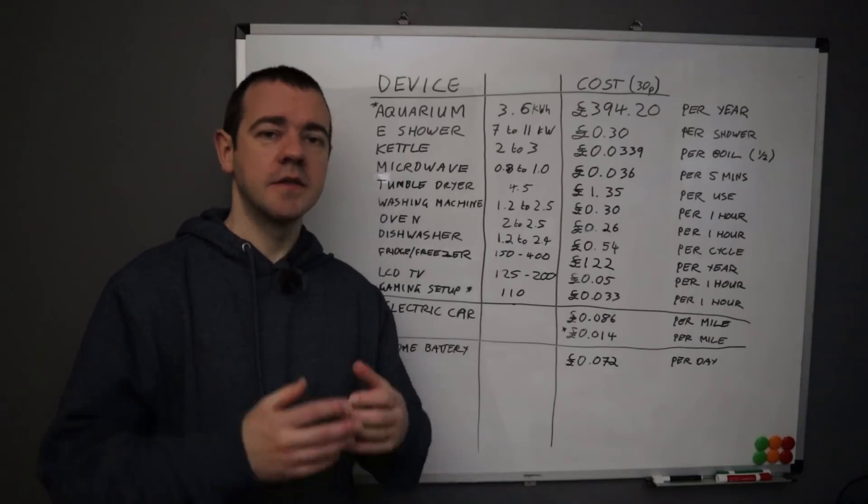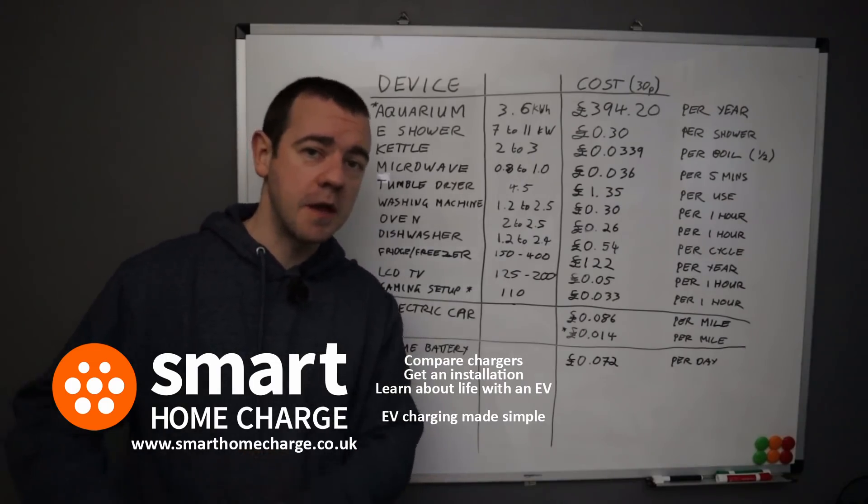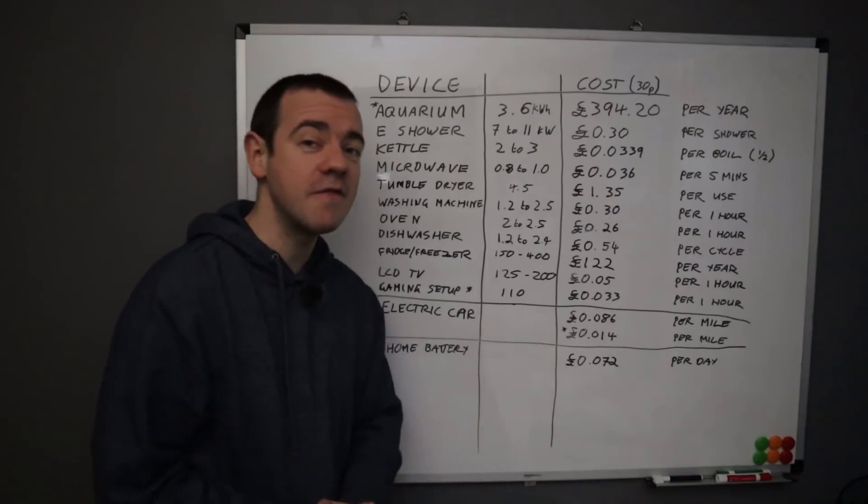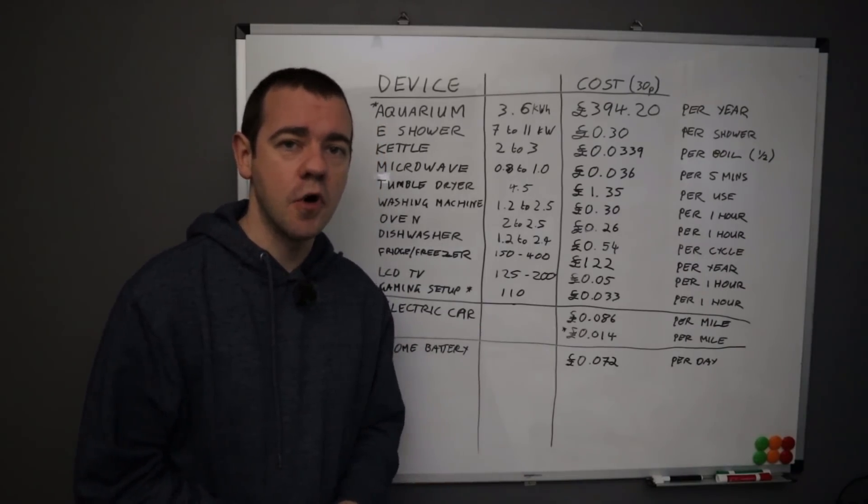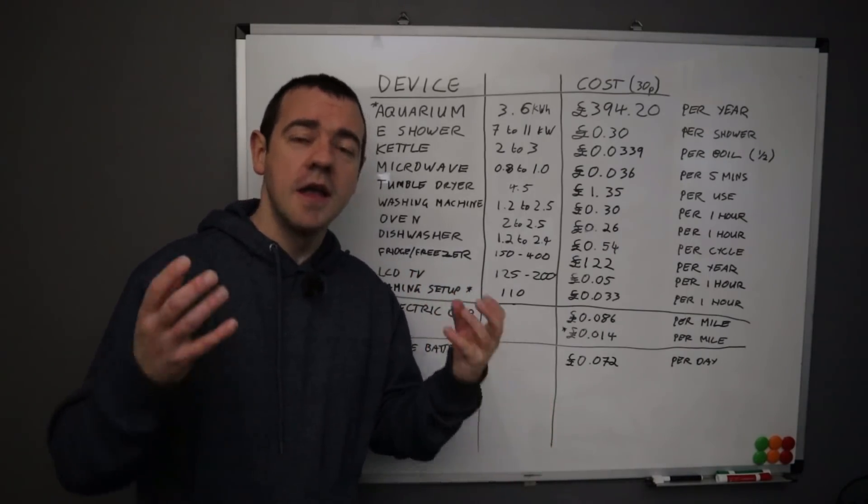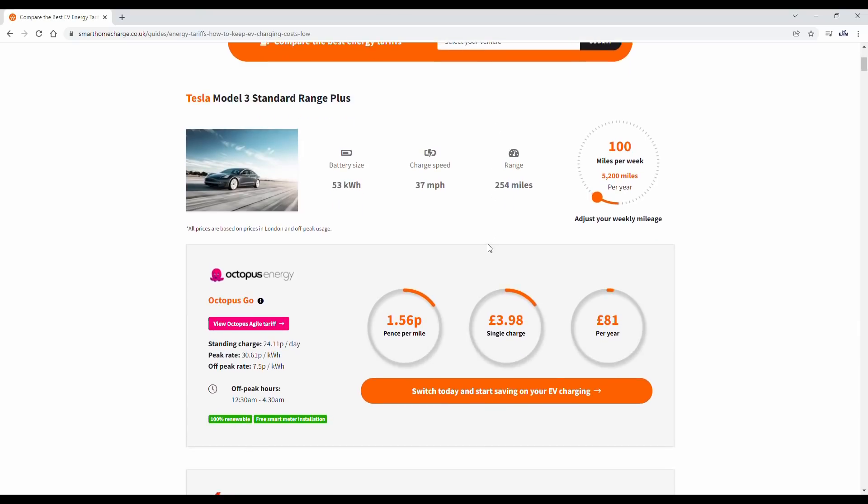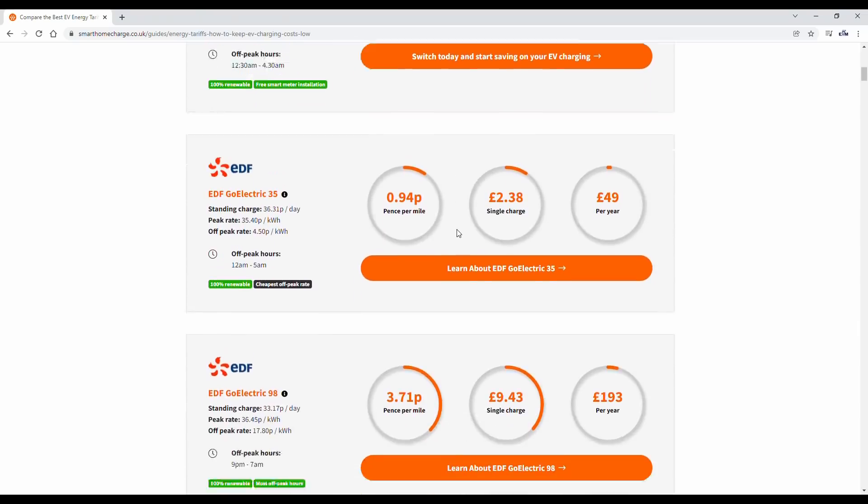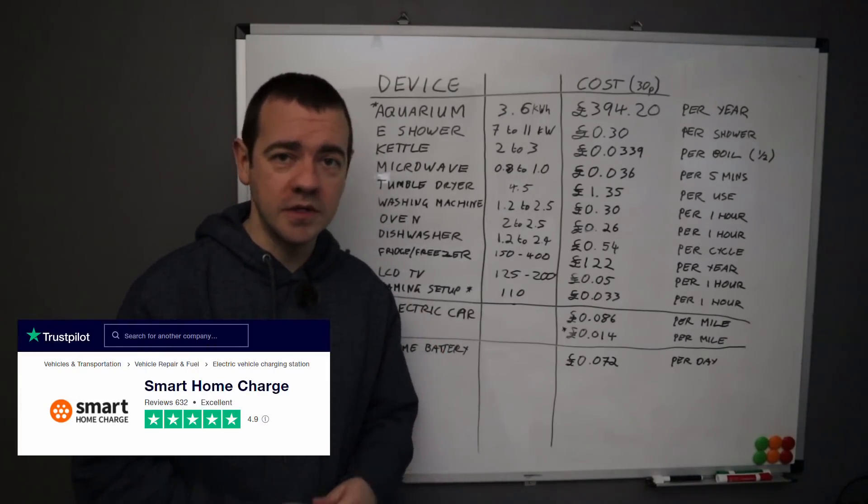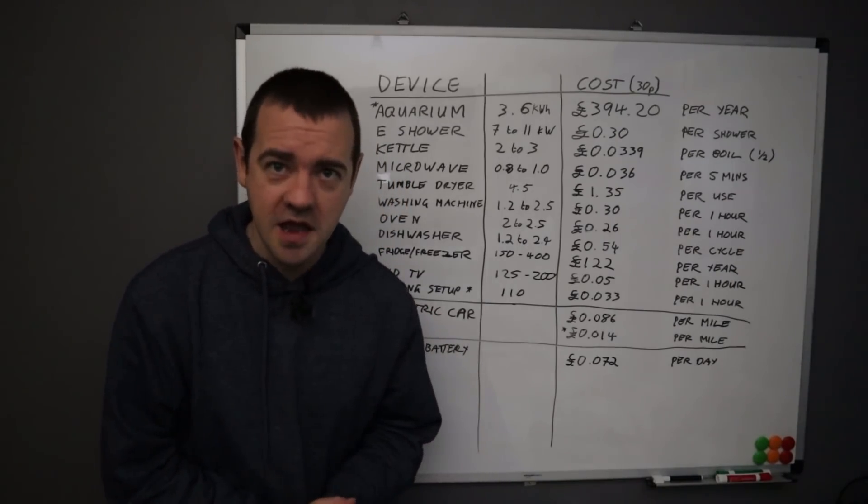And because I have a smart charger, I only charge at 5p per kilowatt hour, which means every mile costs me just 1.4p instead of 8.6p. This is now a good time for me to thank Smart Home Charge who are sponsoring the channel. You've probably seen them many times before. They're the people who installed my smart home charger and with that smart home charger, look at the difference it makes. I'm saving over 7p per mile that I charge from home, so that's saving me a fortune.